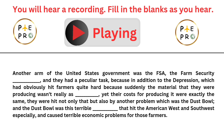They were hit not only by that but also by another problem, which was the Dust Bowl. The Dust Bowl was this terrible drought that hit the American West and Southwest especially, and caused terrible economic problems for those farmers.